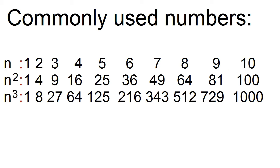The cubes are 1, 8, 27, 64, 125, 216, 343, 512, 729, and 1,000. To find the cube of a number, just multiply the number thrice: 1 times 1 times 1 is 1, 2 times 2 times 2 is 8, 3 times 3 times 3 is 27, and so on. The cube root of 1 is 1, the cube root of 8 is 2, the cube root of 27 is 3, the cube root of 64 is 4, and so on.